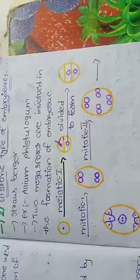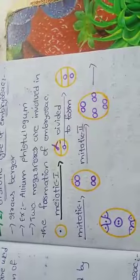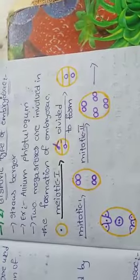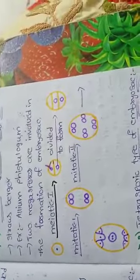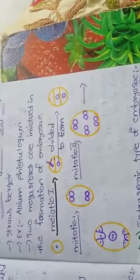Here, 2 megaspores are involved in the formation of the embryo sac. In comparison, in the monosporic type, only 1 megaspore is involved. Here, 2 megaspores are involved in the embryo sac.